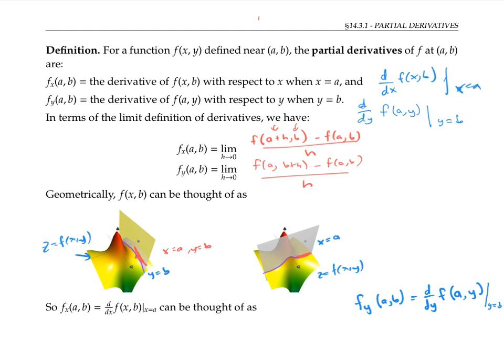To repeat, the partial derivative in the x direction is the slope of the tangent line we get by intersecting with a plane where y is fixed. The partial derivative in the y direction is the slope of the tangent line that we get when we intersect our surface with a plane where x is fixed.